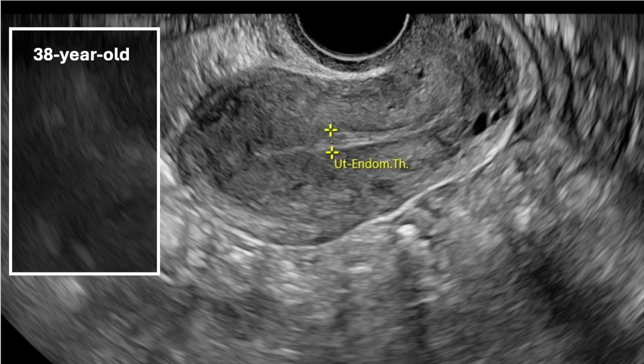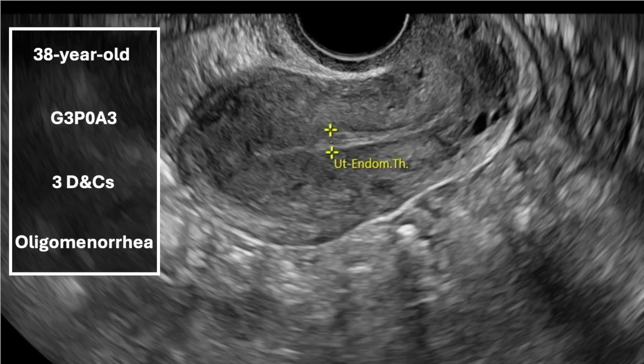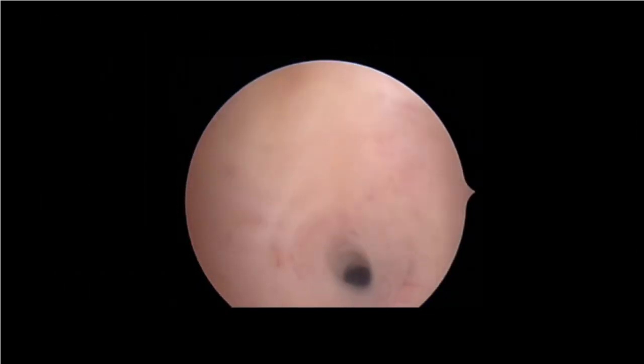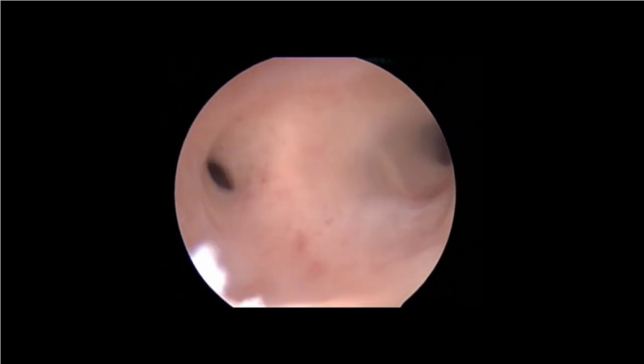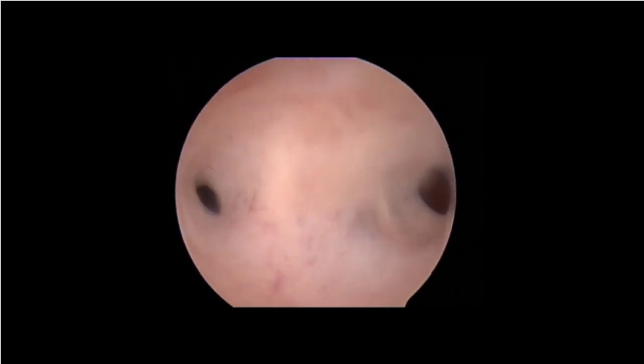We present the case of a 38-year-old woman with a history of three first-trimester pregnancy losses, all treated with dilation and curettage. She desired future fertility. During the ultrasound examination, it was noted that the endometrial lining was interrupted and did not reach the uterine fundus. The hysteroscopic examination revealed dense uterine adhesions occupying the uterine cavity, preventing the visualization of the tubal ostium.